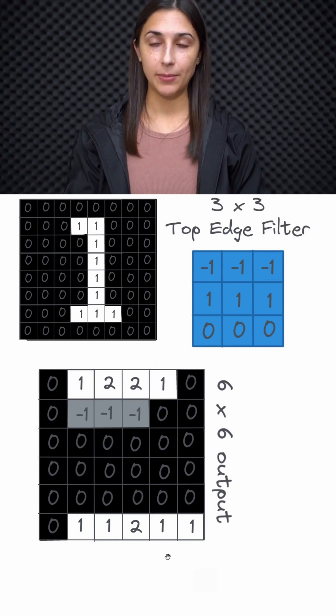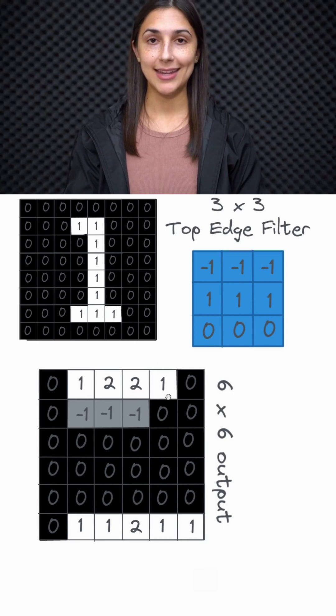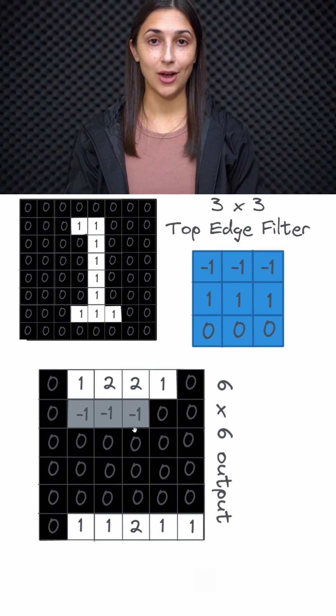Now, we just mentioned that everywhere in the output space that we have a positive value, that is indicative that the filter detected a top edge in the input. Similarly, everywhere we have a negative value in the output is where the filter detected the opposite of a top edge, which would be a bottom edge.